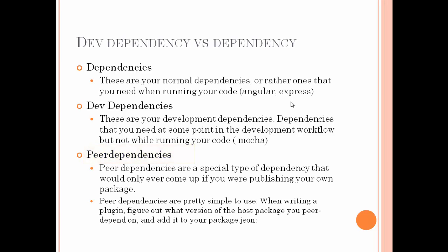Peer dependencies are a very special type of dependencies that would only come up when you are going to publish your own package. In other words, peer dependency is used when you are writing your own plugin — you have to figure out which version of your host package you depend on, and you add those packages in your peer dependency section.